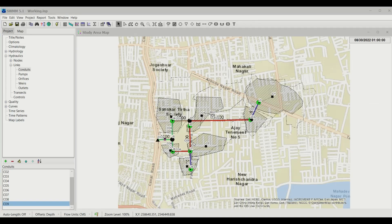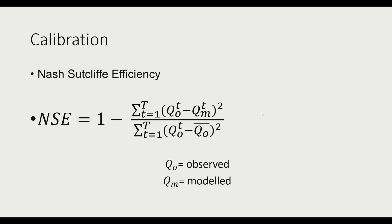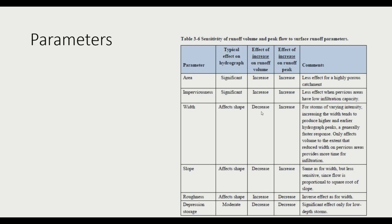The negative NSE means there is significant difference between observed and model data. According to the hydrology manual, area and imperviousness of subcatchments have a direct impact on the peak of the hydrograph — as area or imperviousness increases, runoff increases. Slope and width, on the other hand, affect the shape of the hydrograph.